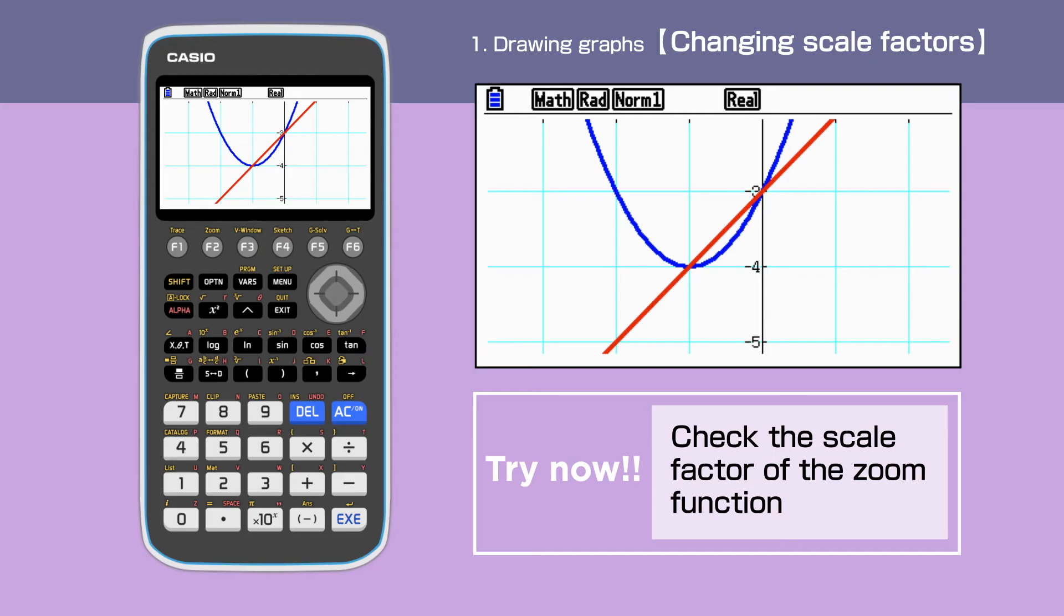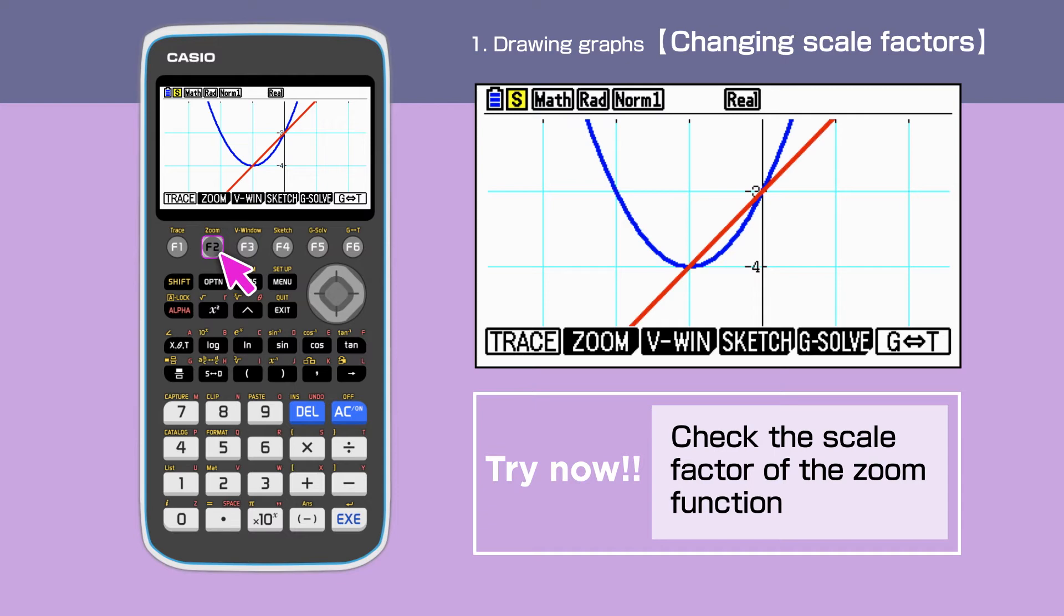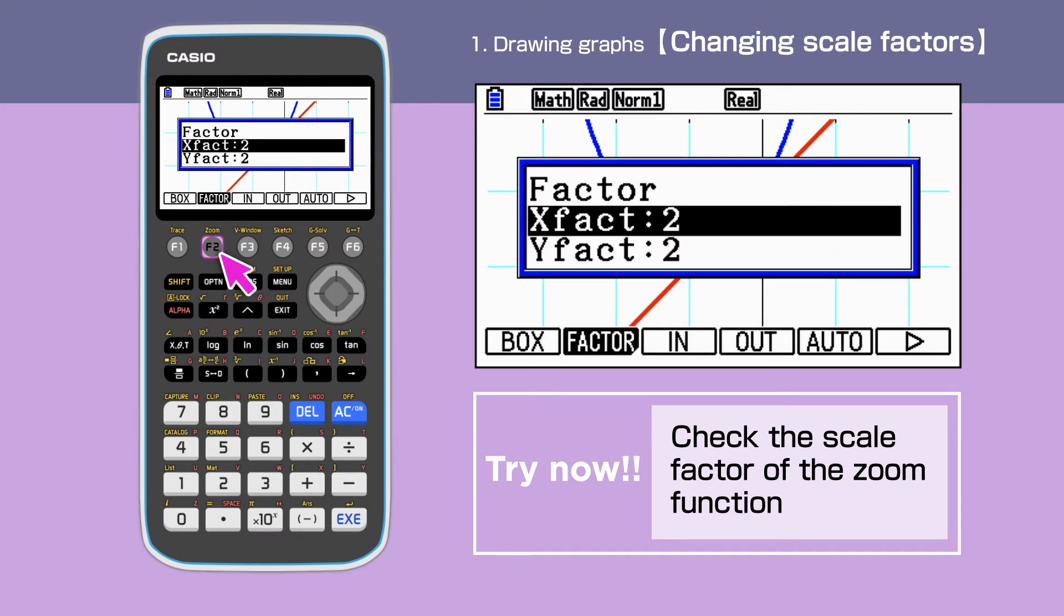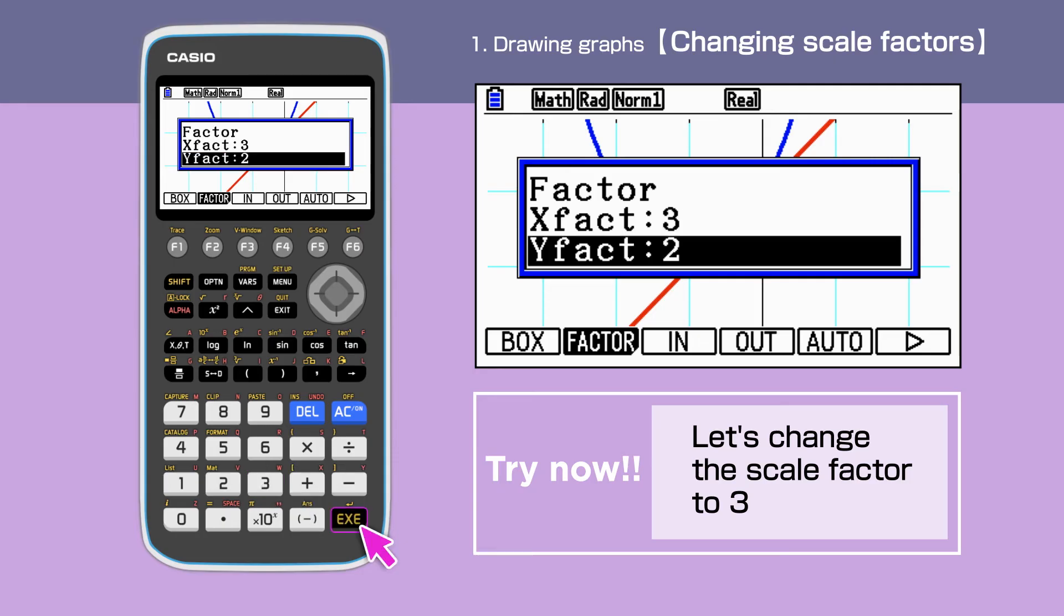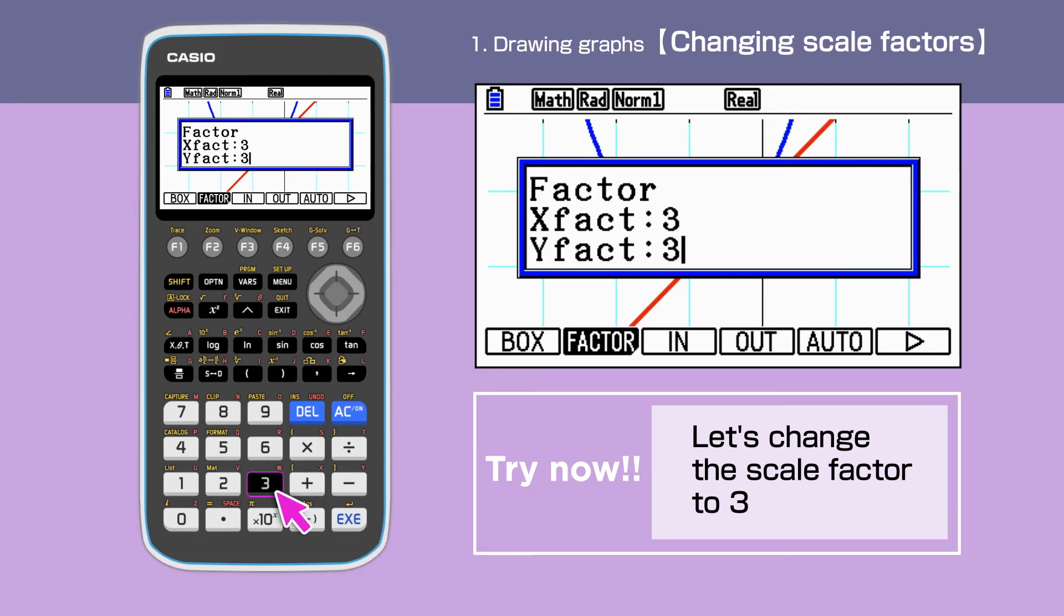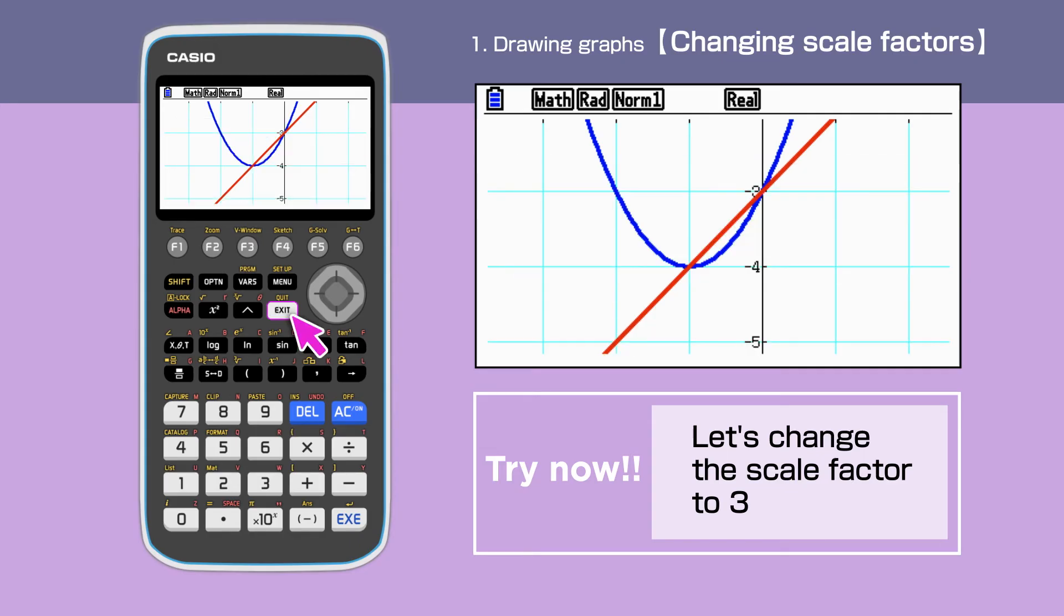We can change scale factors by entering Shift, F2, F2 and enter scale factors of our choice. You can try a different scale factor yourself. Let's set the scale factor to 3. We finish the setting by pressing exit.